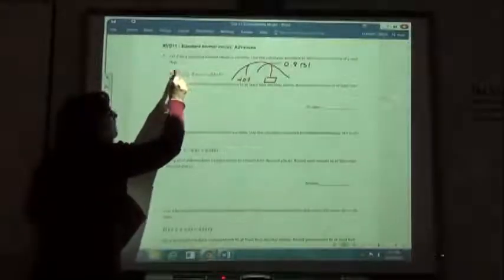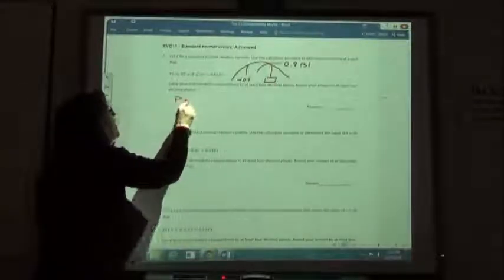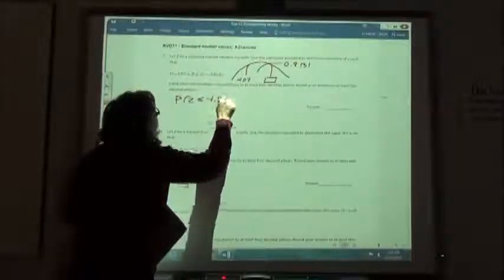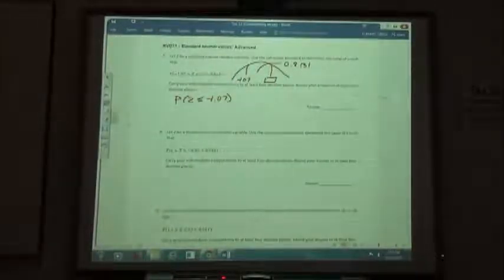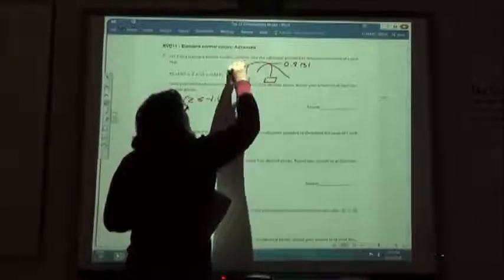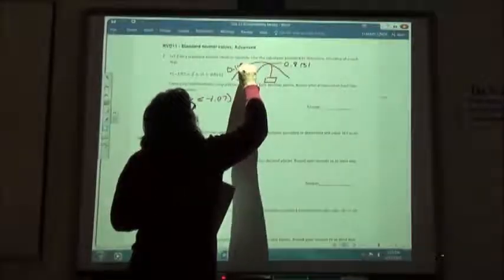So what I'm first going to do is find the area that's under this first number. So on my calculator I'm going to find P of Z is less than or equal to that negative 1.07. That's going to give me the area that's under this little section right here. So clear that out for me, just do the P, P of Z, negative 1.07. There's the number I got. So that number you got there was 0.1423. I'm going to carry it at least four decimal places.